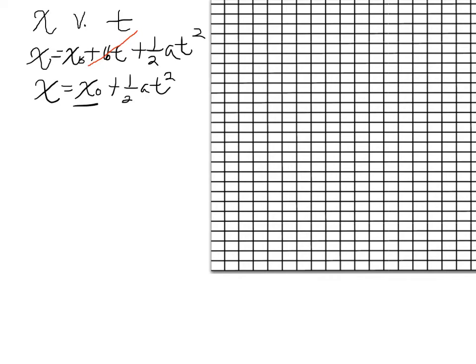So no initial velocity. Our graph is now reduced to x equals x not plus one-half a t squared. And let's even say that there was an initial x value, that x not was not zero. Well, if you tried to plot this data in order to get out of it the acceleration, so let's say you plotted t versus x. x is a function of t squared, and so you'd get a curve out of it. And so there's not a constant slope, your slope can't tell you anything.